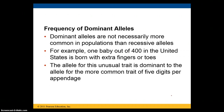Dominant alleles are not necessarily the most common. For example, polydactyly — having extra fingers or toes — is caused by a dominant allele. About one baby out of 400 in the United States is born with extra digits, yet the allele for polydactyly is dominant to the allele for five digits per appendage.